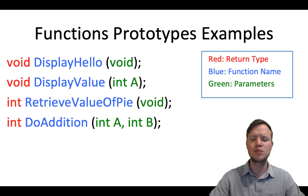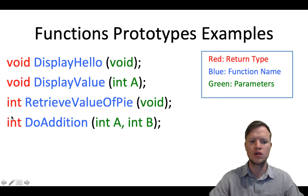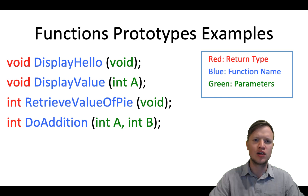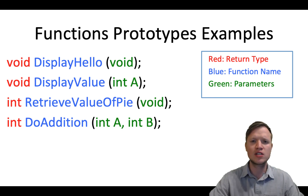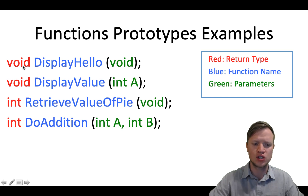The first part of a function prototype — in this case void, or in examples 3 and 4, int — explains the return type of the function. The return type explains what type of value will be returned back to the function call. So if this function returns an integer, whatever it returns back to the function call will be of type integer. If it's void, it will return nothing. So the first two functions return nothing, and the last two will return integer values back to the function call.